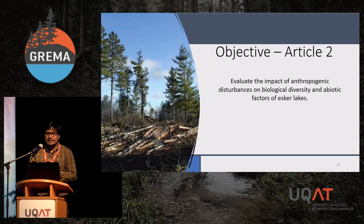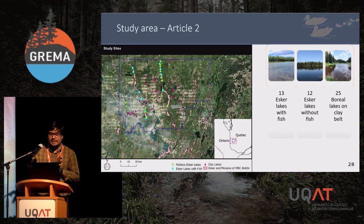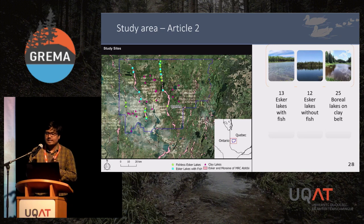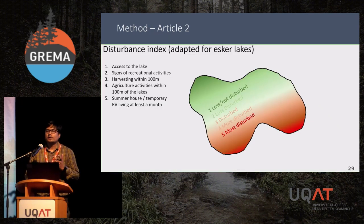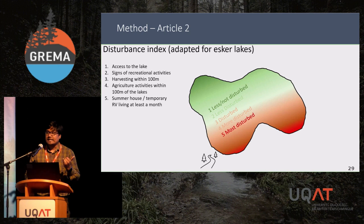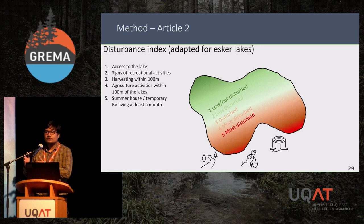However, anthropogenic activity might alter this extreme ESCR ecosystem. The objective of our second article is to evaluate the impact of anthropogenic disturbance on biological diversity and abiotic factors of ESCR lakes. Here, we divided the ESCR lakes into two sections based on the presence and absence of fish: 13 ESCR lakes were with fish, 12 ESCR lakes were without fish, and 25 boreal lakes were on the clay belt.